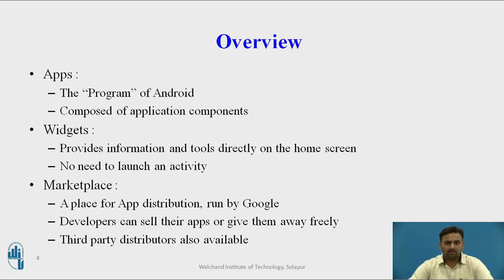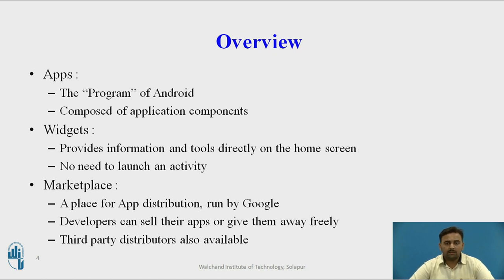Let us start with the overview. First, the apps — an app is a program written in Android. One app contains many activities and collectively they perform a certain action. A complete set of activities used for one purpose by the user is called an app. It is composed of many components — tools used while developing it, such as buttons and taskbars. There are a number of activities going on in an application, so it is made up of different application components.